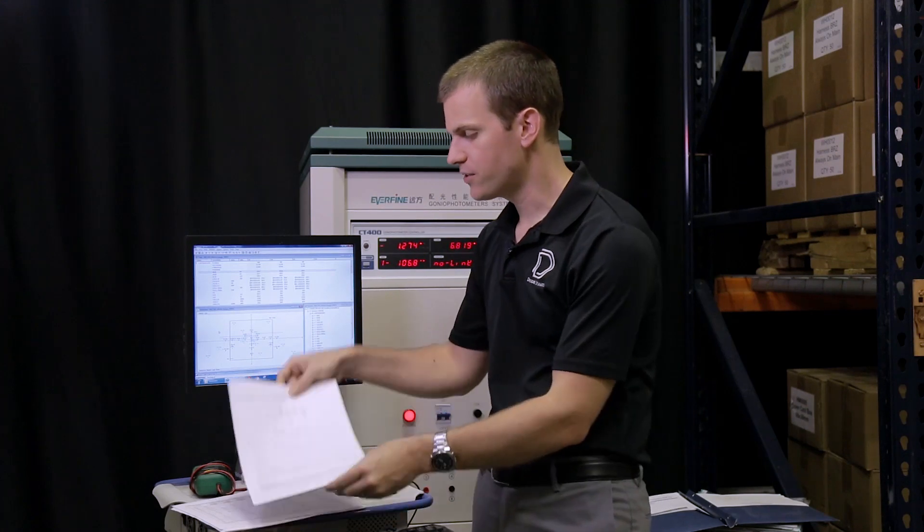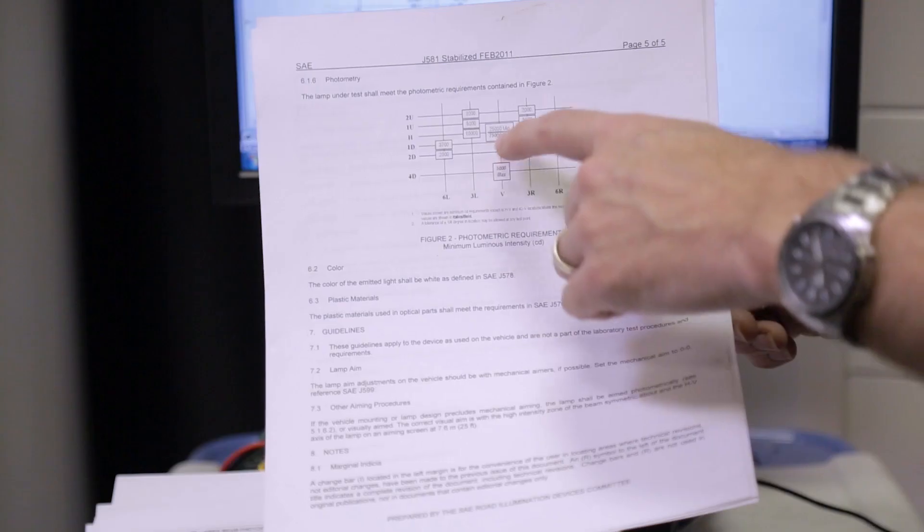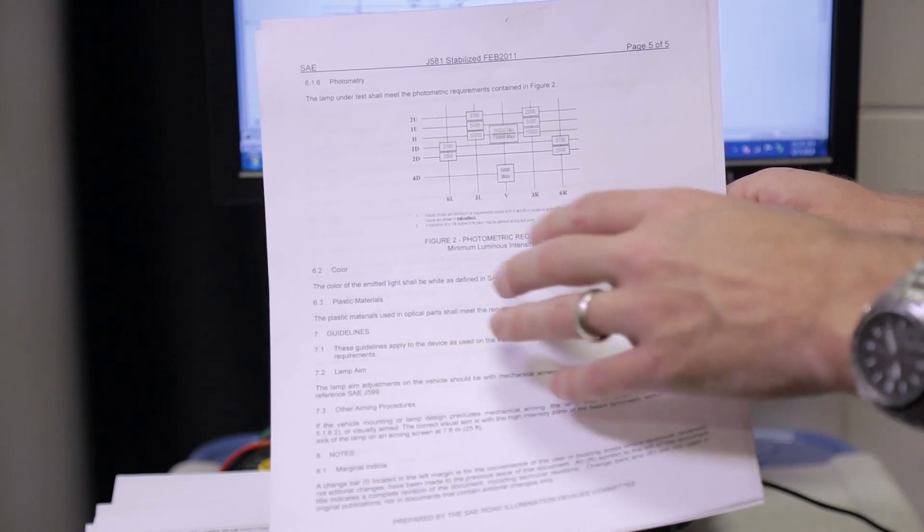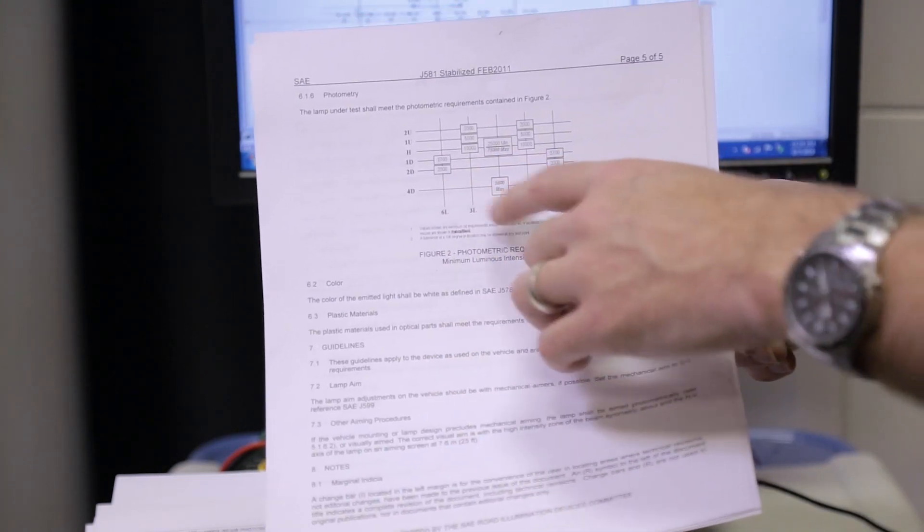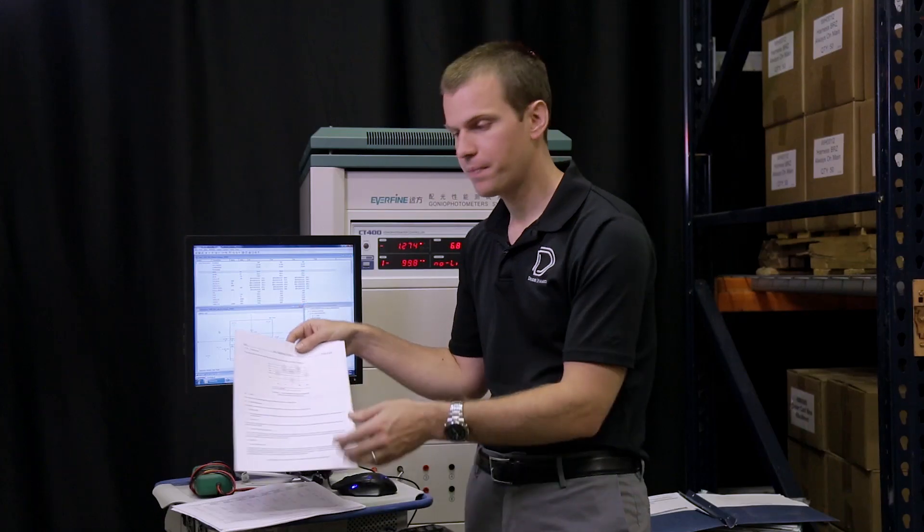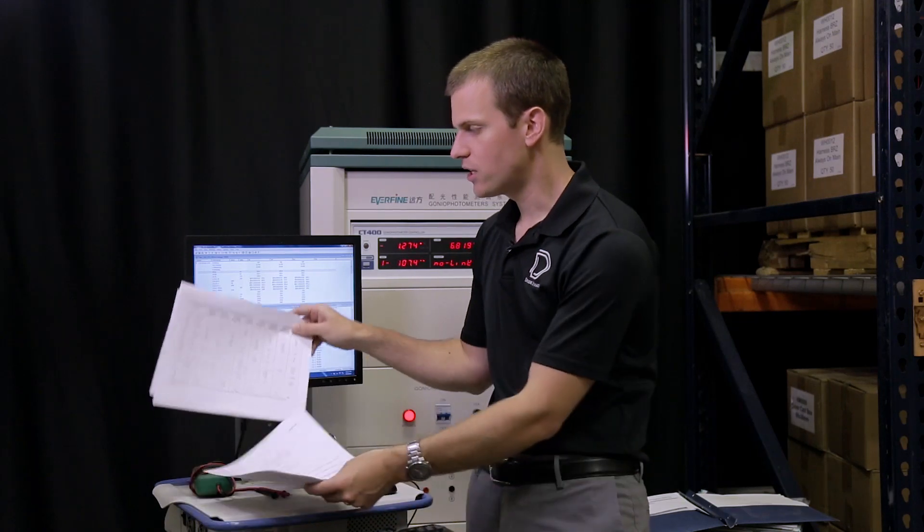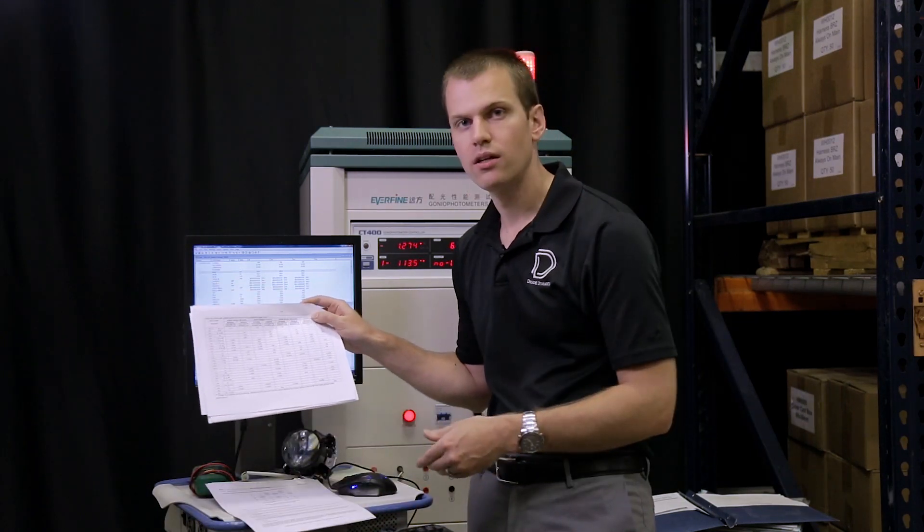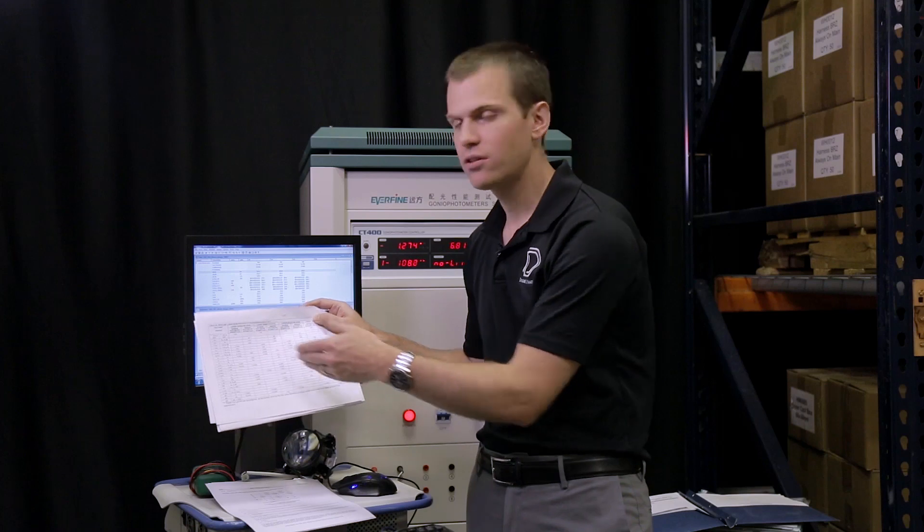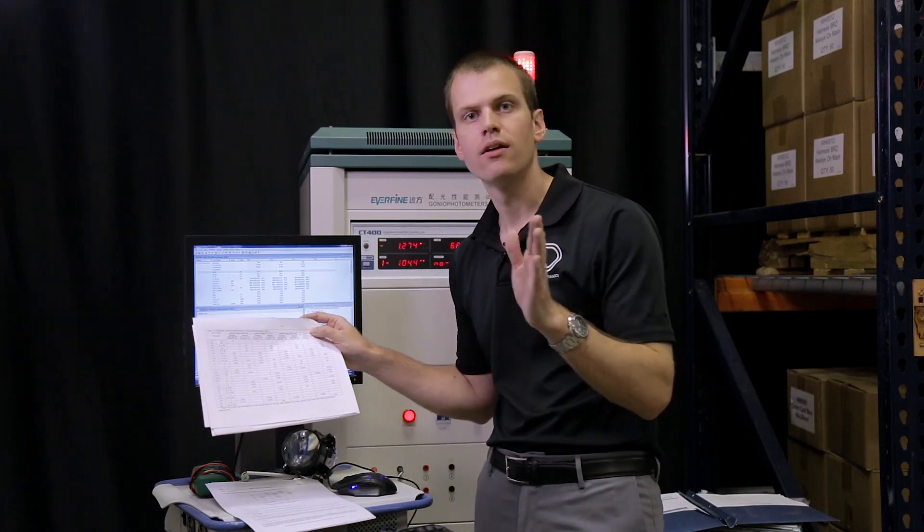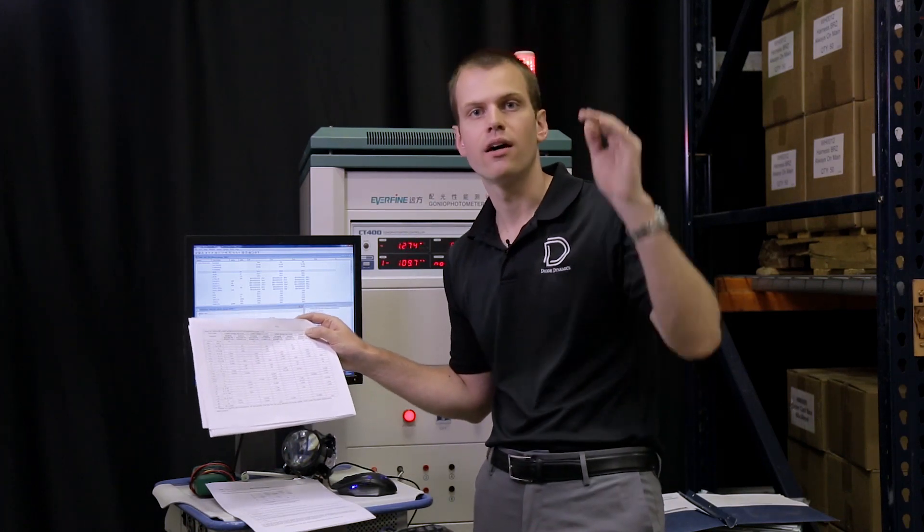So for example this is an SAE regulation and we have a max point right in the center but then we have to also make sure we're not shining too much light down and away. FMVSS or DOT testing is written like this as well. For these we'll have HV notation so left or right and then up or down.